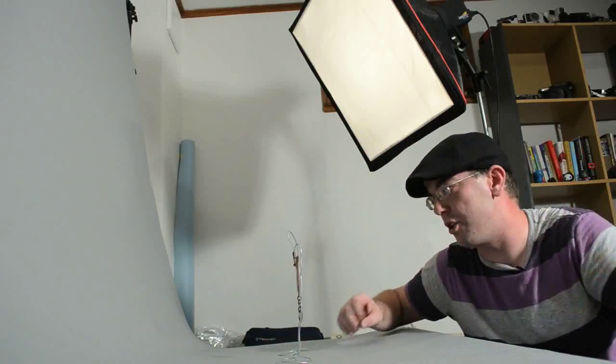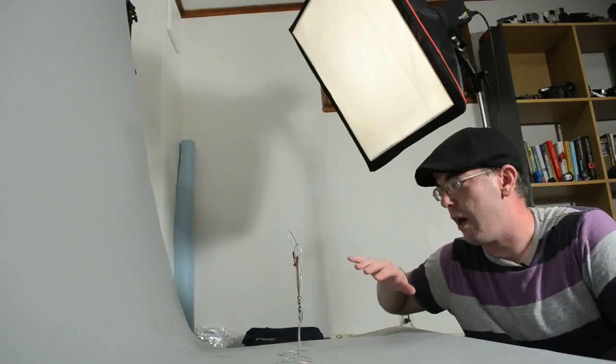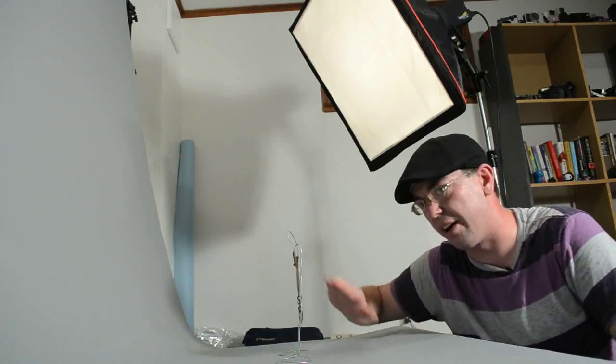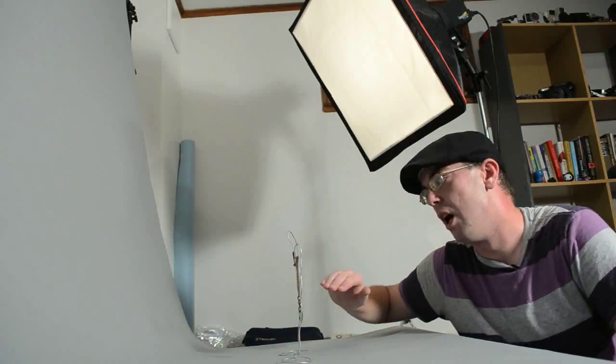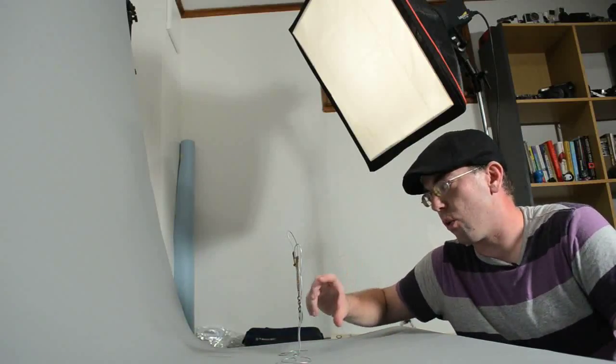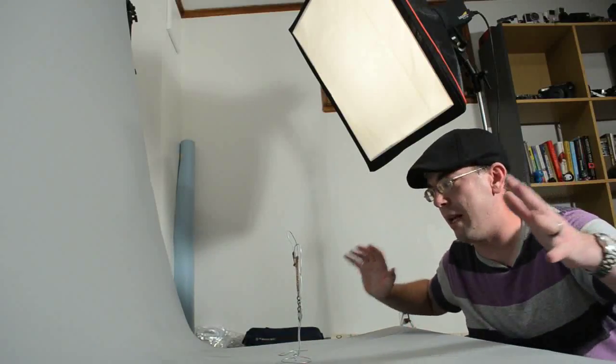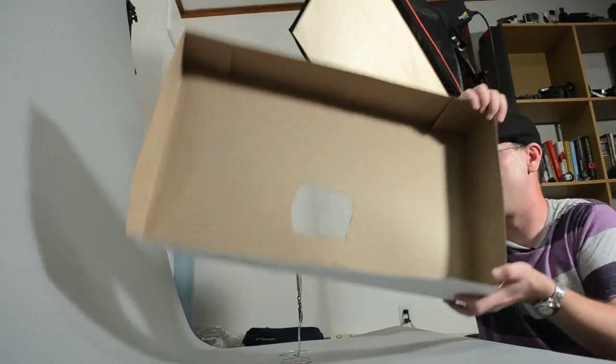So what we're going to do is control some of the angles. Because this isn't a flat surface, it has a bunch of very varied angles on it. We're going to control some of them by putting something dark in front of the object and try to get as many of those angles as we can. What I'm going to use to do that is a piece of cardboard with a hole cut in it essentially.